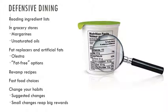You want to choose more unsaturated oils. When you use fat replacers and artificial fats, you want to know more about how to cook them — whether they're going to taste different, or if the texture or smell of the food will be different. You can also revamp recipes; for example, if a recipe calls for butter, you can use olive oil instead.